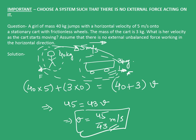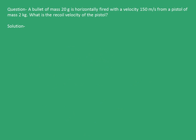With this, we can see how important it is to choose a system such that there is no external force acting on it. Before ending this chapter, let's consider one last example. A bullet of mass 20 grams is horizontally fired with a velocity of 150 m/s from a pistol of mass 2 kg. What is the recoil velocity of the pistol?